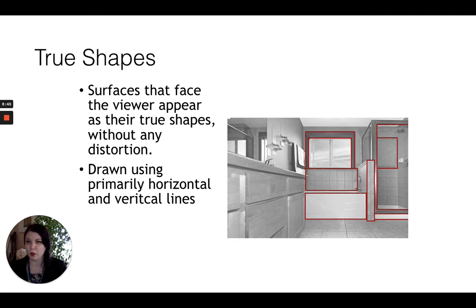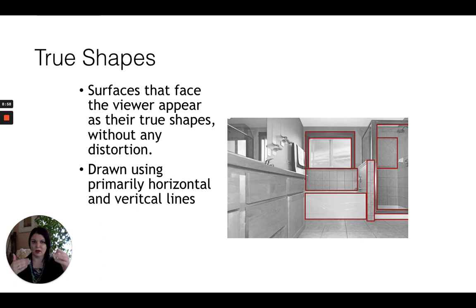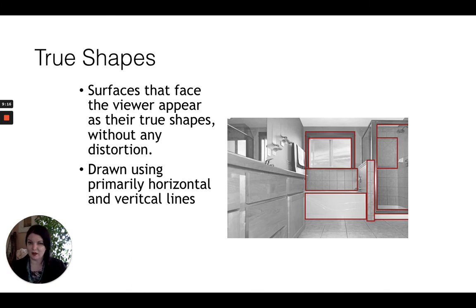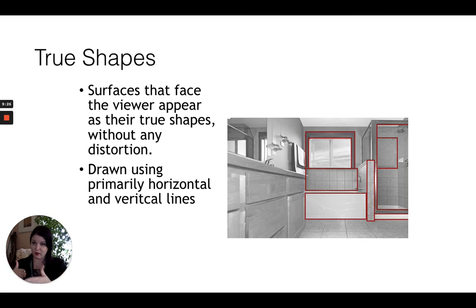Surfaces that face the viewer appear as their true shapes without any distortion. In this bathroom scene, the side of the bathtub, the window — everything outlined in red is facing directly at you and is its true form. But look at the counter and the vanity with the sink — those lines converge and move forward, distorted because of perspective. Just because some lines in an image are distorted by perspective doesn't mean all of them are. Surfaces facing us head-on and not angling toward the vanishing point are called true shapes.